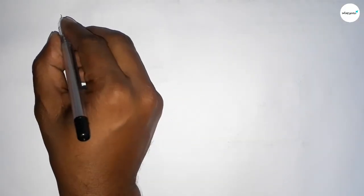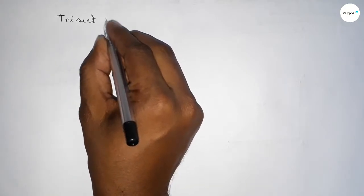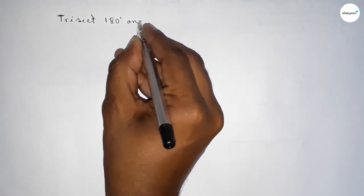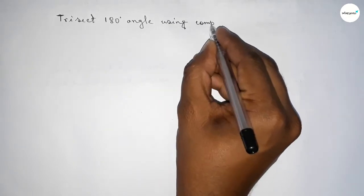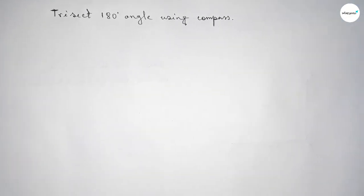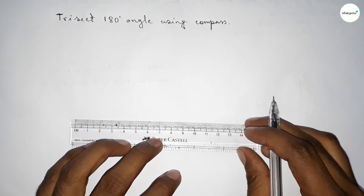Hi everyone, welcome to SISR classes. Today in this video we have to trisect a 180-degree angle using a compass. So let's start the video. First of all, we have to draw a line